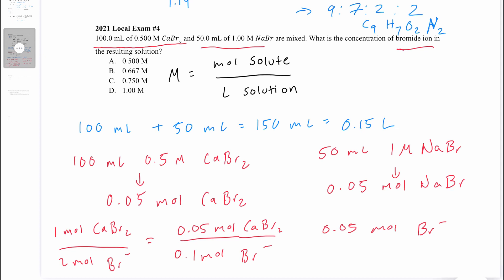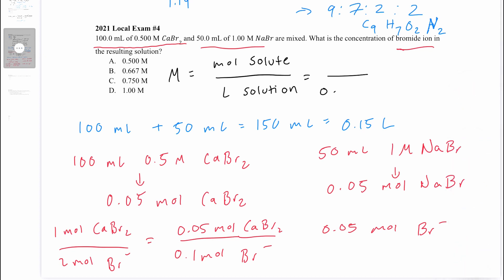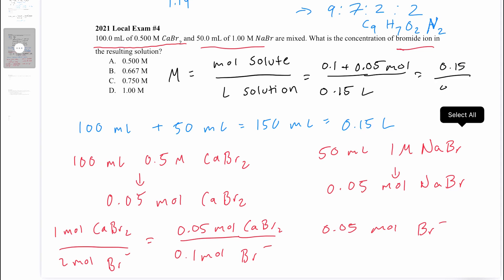Putting it all together: we have 0.15 liters of solution and 0.1 plus 0.05 moles of bromide ion — that's 0.15 moles. So 0.15 moles over 0.15 liters equals 1 molar, and that is answer choice D.